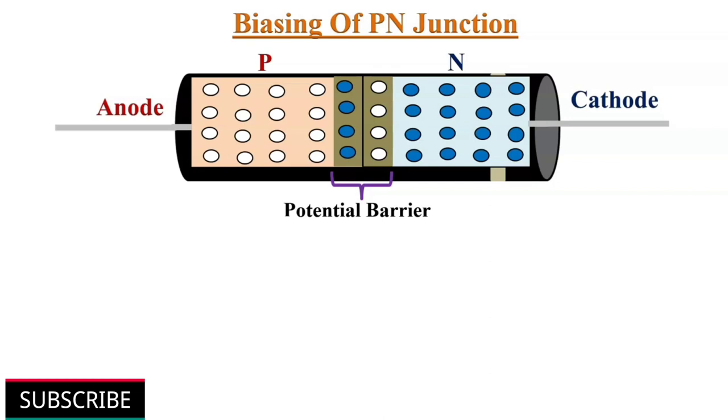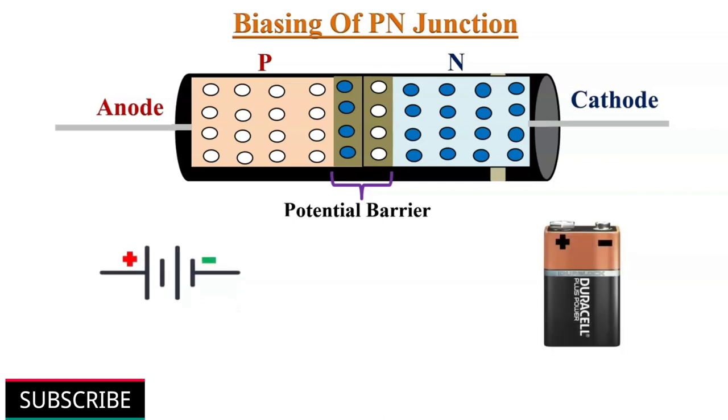We need to bias this p-n junction. In electronics, biasing means setting of initial operating conditions of an active device by using a DC voltage source. There are three biasing conditions for p-n junction diode: zero bias, forward bias, and reverse bias.